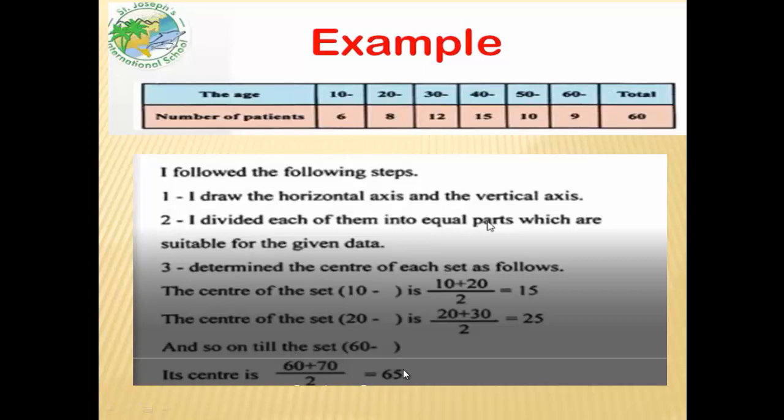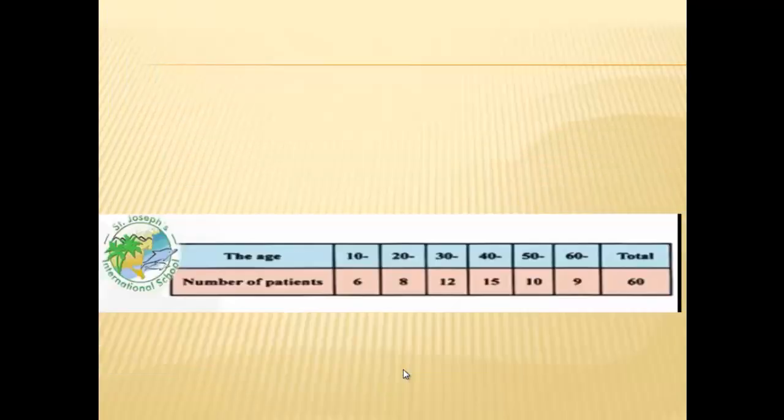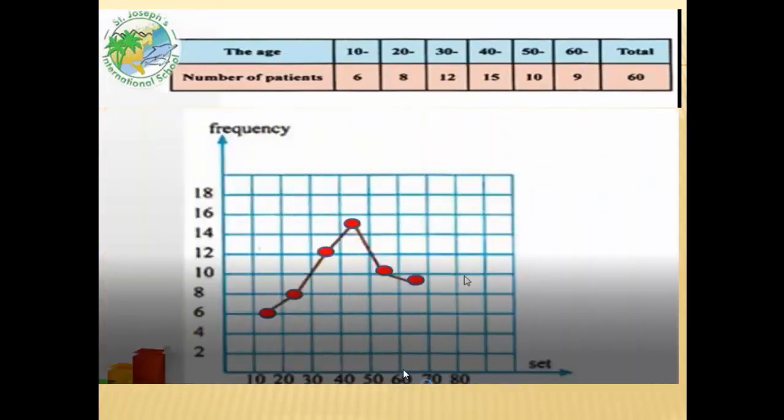This is the first step for drawing the frequency curve. Now from this table we can draw the chart. Here the ages on the x-axis, where the number of patients on the y-axis should be divided into equal parts. Here 10, 20, 30. According to the chart we can divide it into equal parts by even numbers: 0, 2, 4, 6, 8, 10, 12, 14, 16, 18.